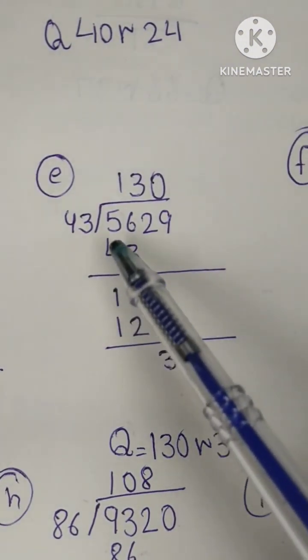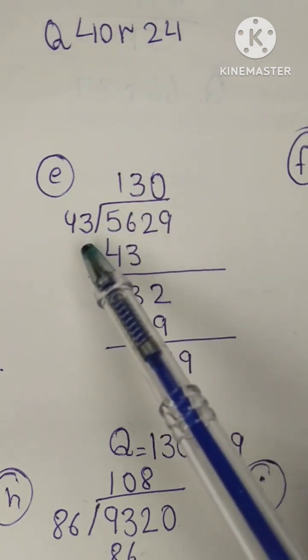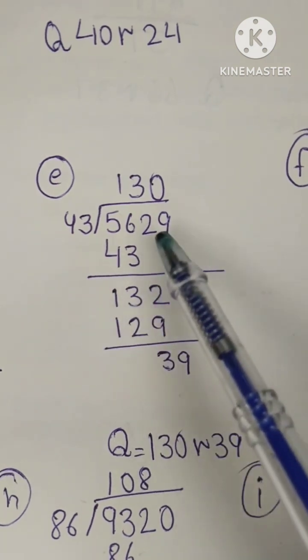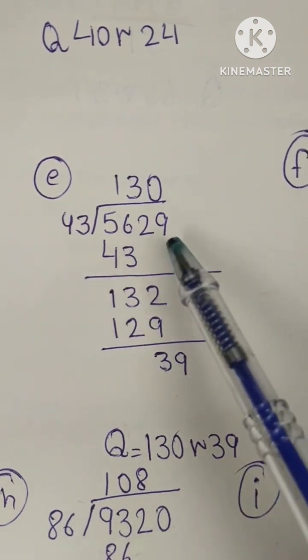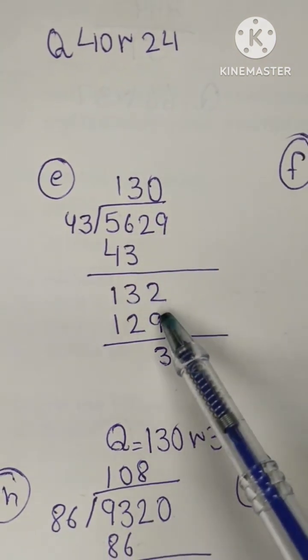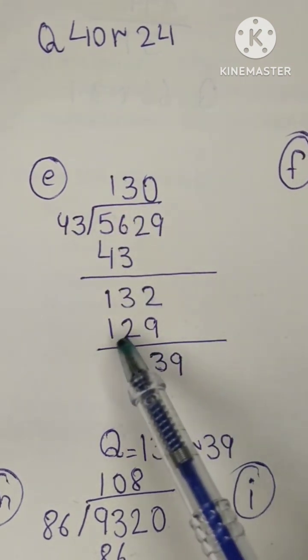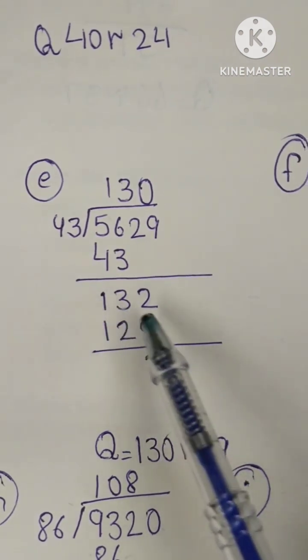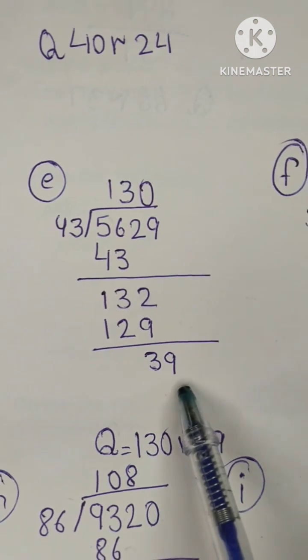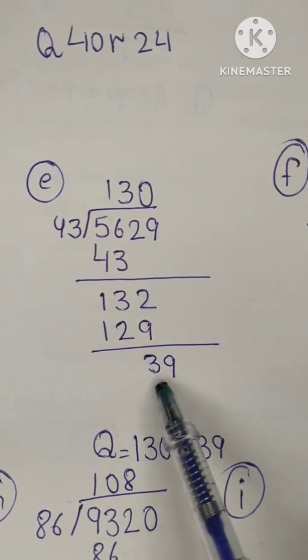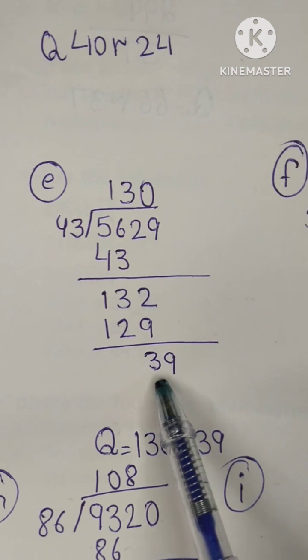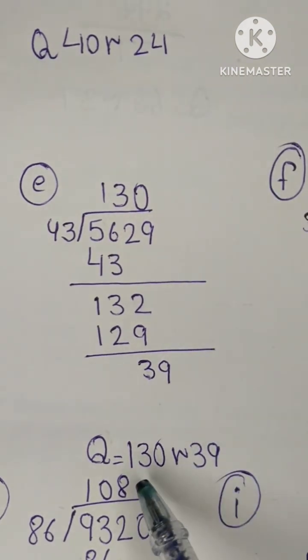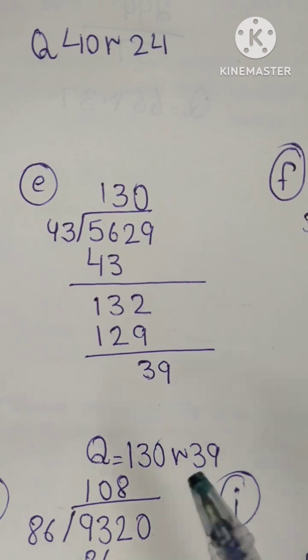Next question is question number E, 43 into 5629 is divided. 43 multiplied by 1 is equal to 43, 56 we have minus then 13. 2 dropped because 13 was small value which could not divide, so 43 into 129 and your answer is 39. We have minus here, we have 3 and then 9 drop. Now 39 again is a small value which doesn't divide, so again place 0 and then our answer will be quotient 130 and remainder 39.